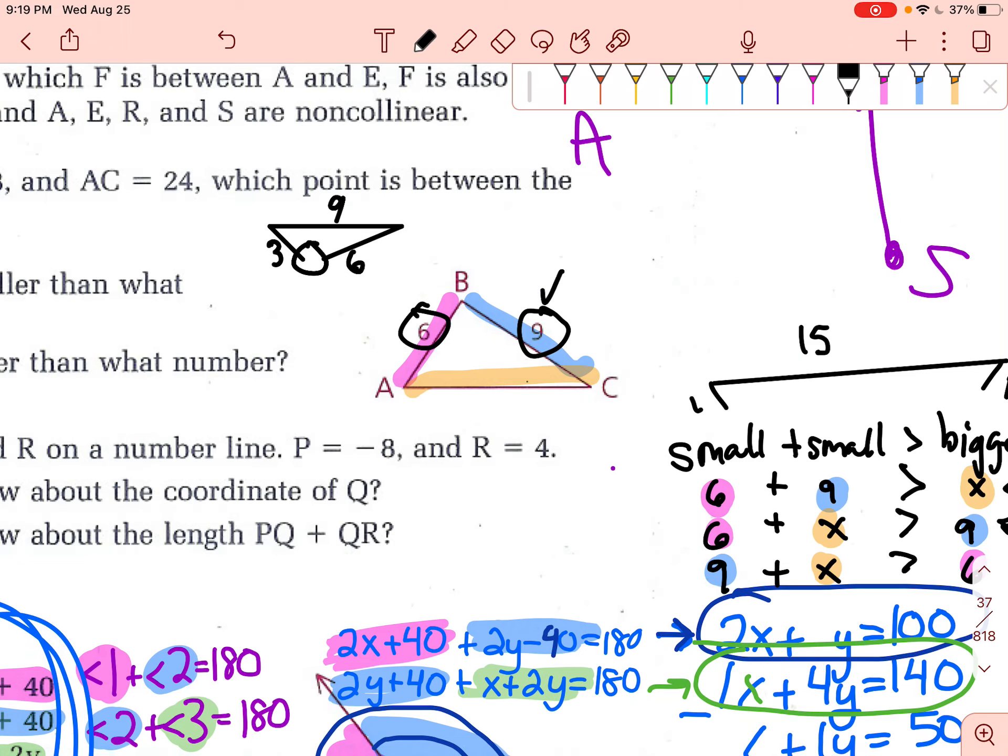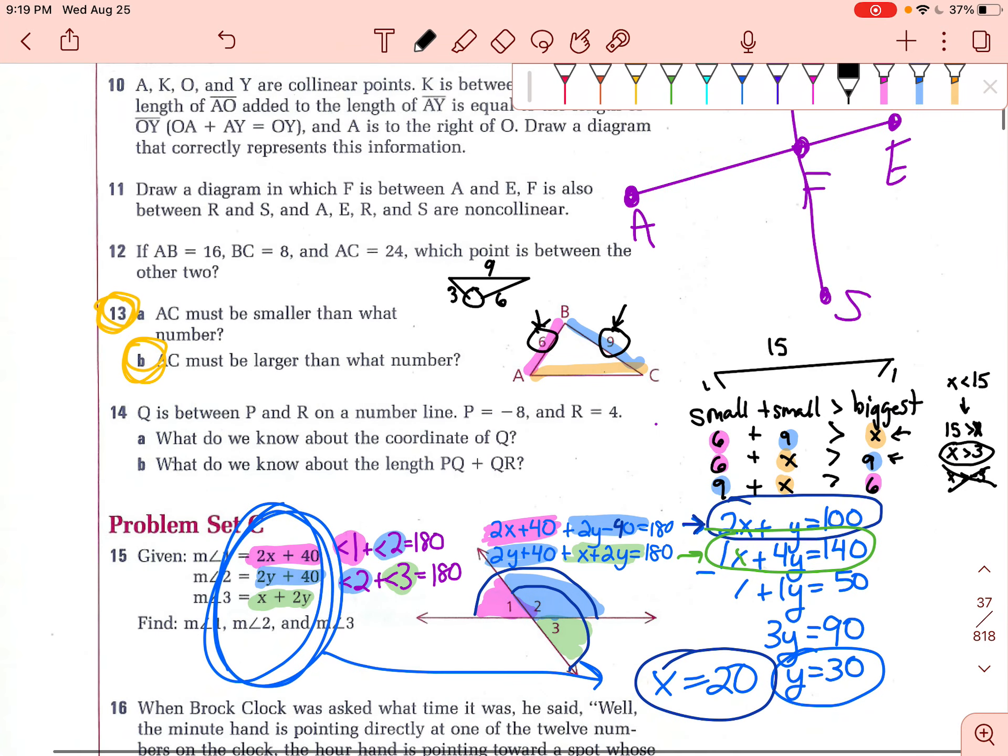And then again, you can see where the 15 comes from by adding those numbers together. So AC must be smaller than 15, and AC must be larger than three.